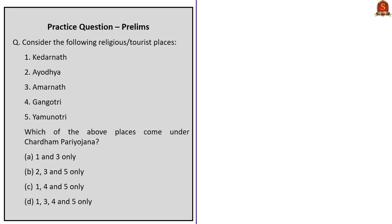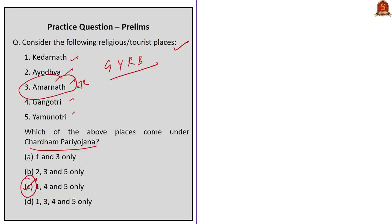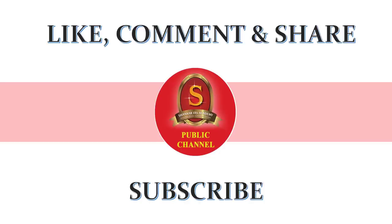Practice question 5: Consider the following religious or tourist places — Kedarnath, Ayodhya, Amarnath, Gangotri, Yamunotri. Which of these come under Chardham Pariyojana? The Chardham project connects four holy shrines in Uttarakhand: Gangotri, Yamunotri, Kedarnath, and Badrinath. Therefore, the correct answer is Option C: 1, 4, and 5 only. Amarnath is in Jammu and Kashmir, so it can be easily eliminated. With this we conclude today's news analysis.